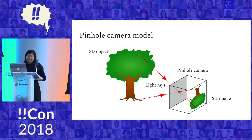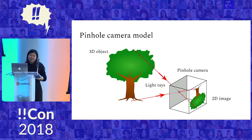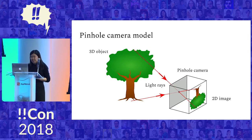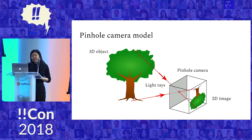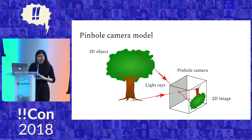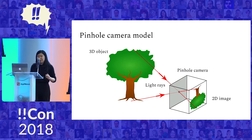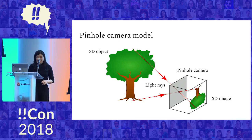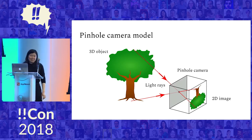Before we even talk about computers, I'm going to talk about pinhole cameras. The way a pinhole camera works is that you have this box with a pinhole on the front — that's the aperture where light goes in — and on the back you have some photographic film. If the light rays coming from an object are at the right angle, they go into the aperture, they strike the photographic film, and that's how you get the image. It's sort of like a geometrical setup.